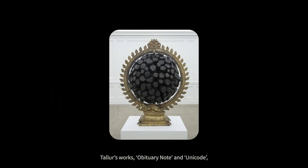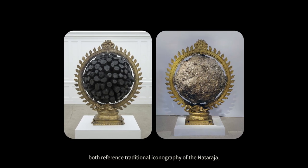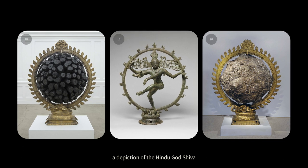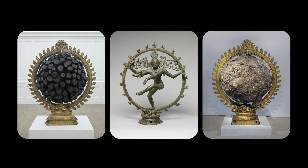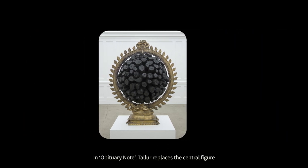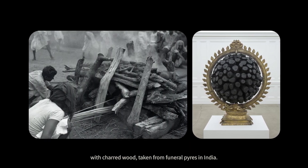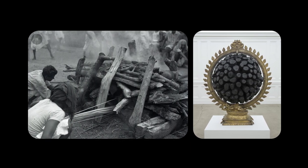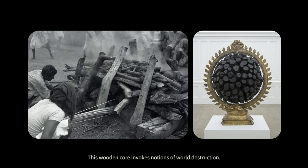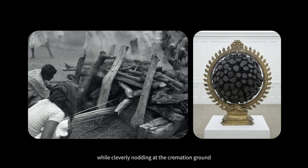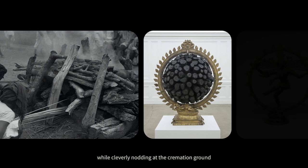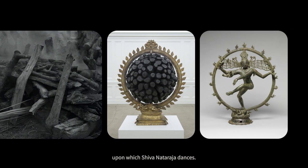Talur's works Obituary Note and Unicode both reference traditional iconography of the Nataraj, a depiction of the Hindu god Shiva in the role of a divine cosmic dancer encircled by a flamed halo. In Obituary Note, Talur replaces the central figure with charred wood taken from funeral pyres in India. This wooden core invokes notions of world destruction, while cleverly nodding at the cremation ground upon which Shiva Nataraja dances.